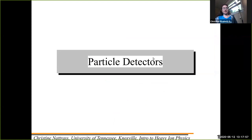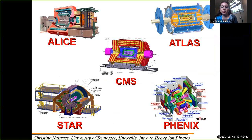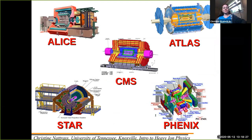The next part is going to be on particle detectors, and this is intended to be a short introduction, not a comprehensive one. If you look at most of the large, active particle detectors, they tend to look a lot the same. Most of them are wrapped around the beam pipe, and then you build out around the beam pipe so you have different layers like an onion.